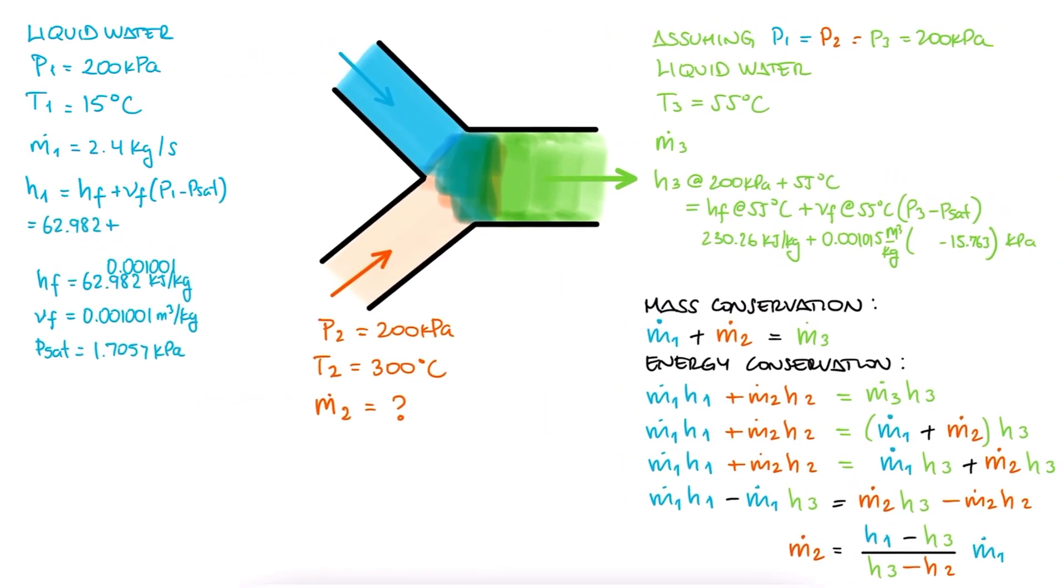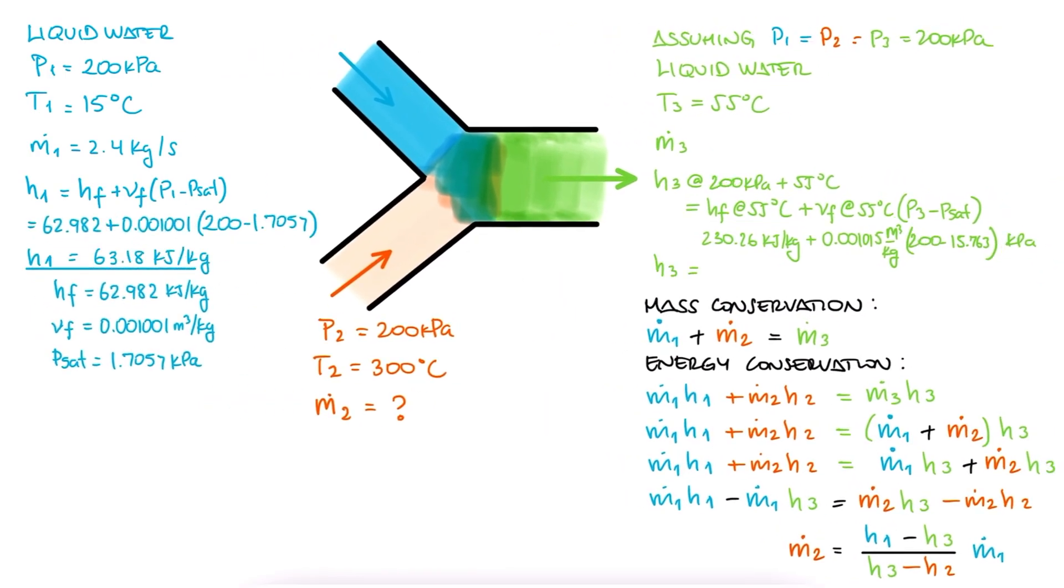We substitute these values and find the specific enthalpy values for 1 and 3. Remember that alternatively, if you don't need that much accuracy, you can just assume h1 and h3 to be hf at their respective temperatures, without correcting for pressure.